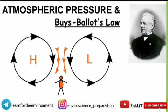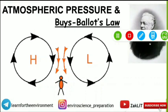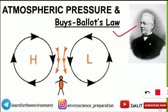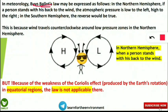Next is atmospheric pressure and Buys Ballot's Law, which has also been asked in the UGC NET Environmental Science examination. The law states that in the Northern Hemisphere, if a person stands with their back to the wind, then the atmospheric pressure is low towards their left and high towards their right.